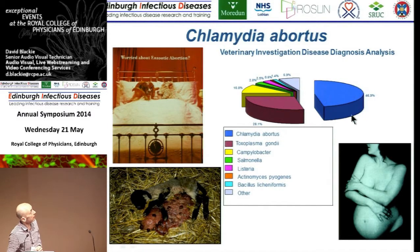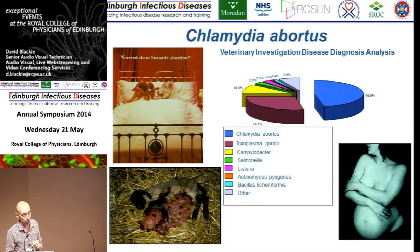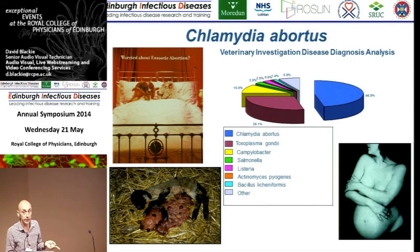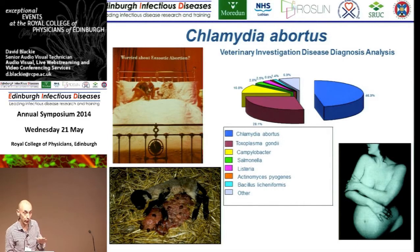Chlamydia accounts for almost half of the reported incidence of infectious abortions in sheep in the UK — a huge problem. As a zoonosis it will infect humans. The main issue is if pregnant women come into contact with this infection. This is one of the few situations where chlamydial infection alone can be directly fatal. That's why pregnant women are always advised to avoid contact with sheep, particularly at lambing time.